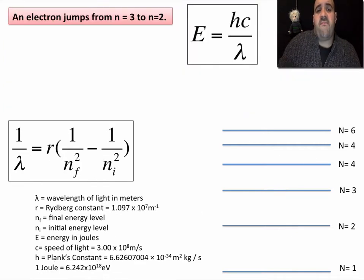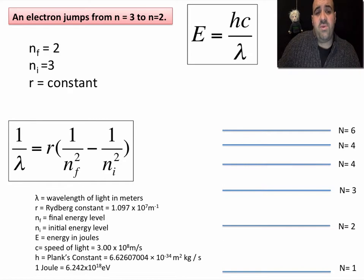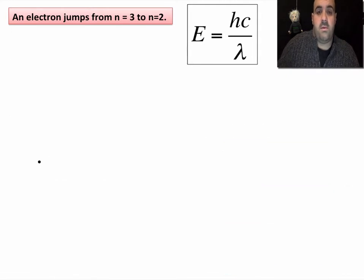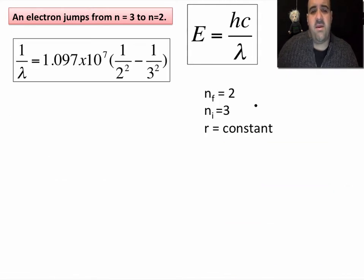Let's go ahead and do this. An electron is jumping from energy level three to energy level two. What are we doing? We know that the final energy level is two, the initial is three, and we know that our r value in this equation is constant.